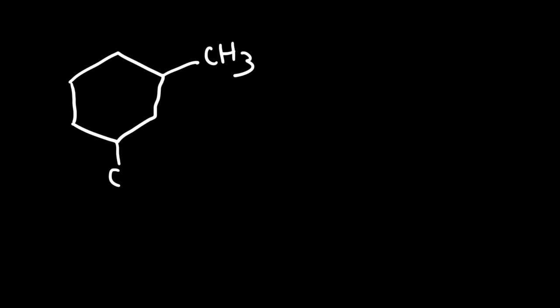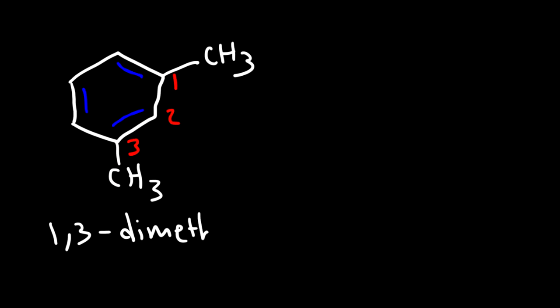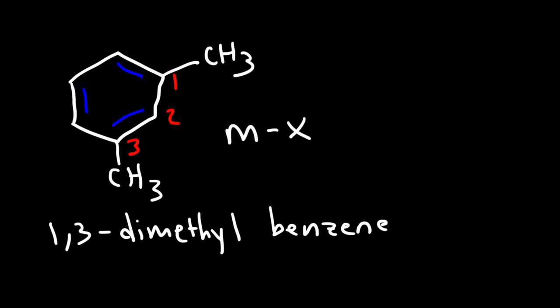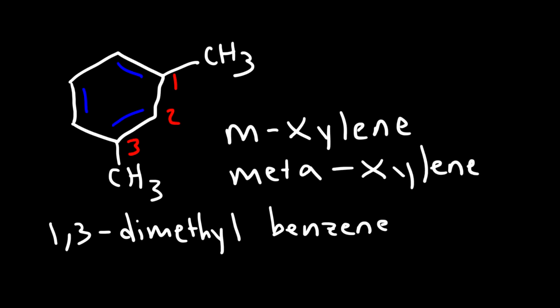For the next example with two methyl groups, counting the positions gives 1,3 — so we can call it 1,3-dimethylbenzene. Since 1,3 is the same as meta, we could also say this is meta-xylene, or m-xylene. Both ways are acceptable.